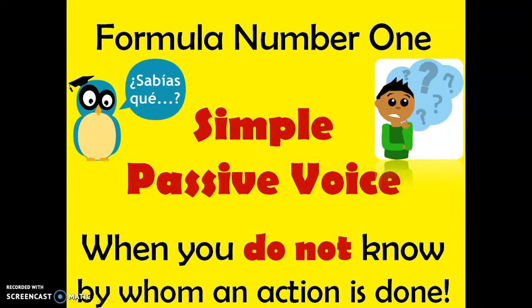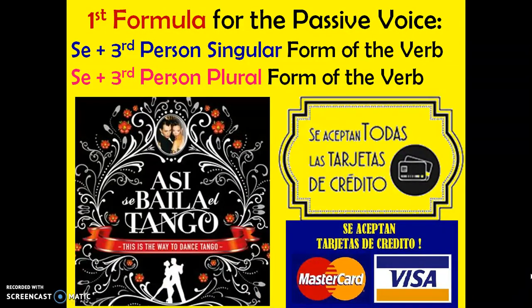Now let's take a quick review of our previous video. There are actually two kinds of passive voice. There was the simple passive voice that we learned first — we use that when we do not know by whom an action is done. When we say something like Así se baila el tango, we have a singular noun tango, so we use the singular form baila — se with third singular or se with third plural. So Así se baila el tango uses the third singular form. With a plural example: Se aceptan todas las tarjetas de crédito — aceptan is plural because tarjetas de crédito is plural. That's when we do not know by whom — credit cards are accepted, the tango is danced.